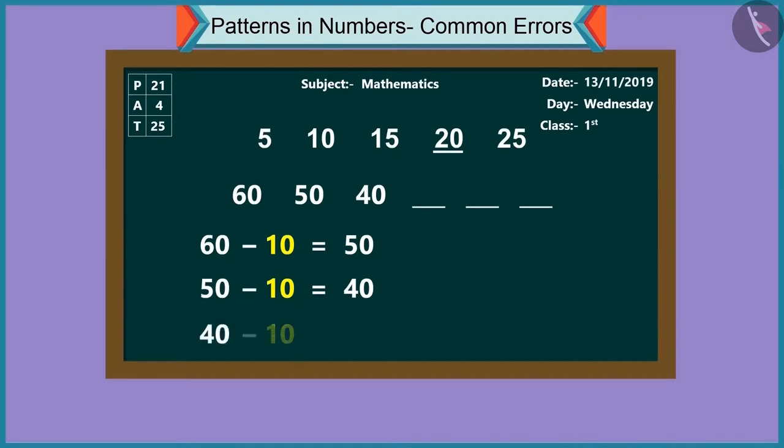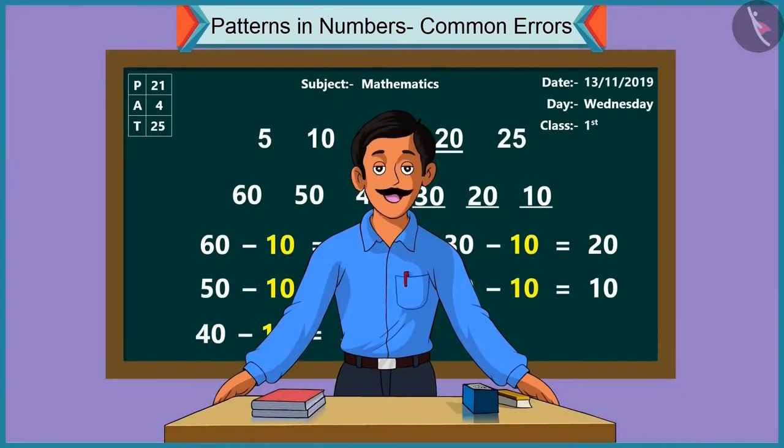Hmm, subtracting ten from forty, we get thirty. Subtracting ten from thirty, we get twenty. Subtracting ten from twenty, we get ten. Absolutely correct.